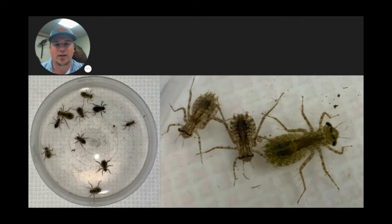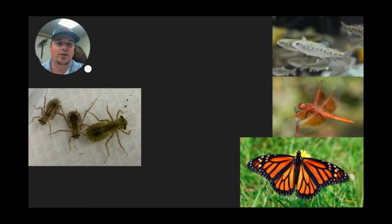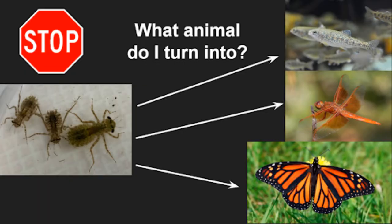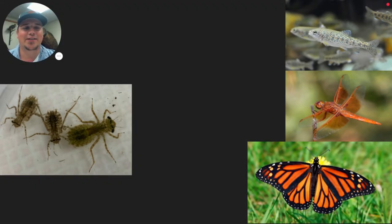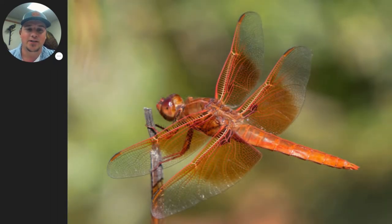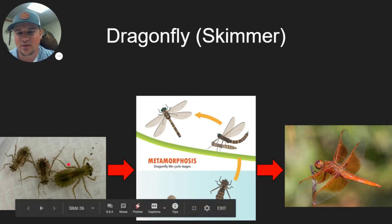The next animal looks similar to the last one, so use your detective skills. This is the baby animal and you're trying to figure out what it turns into. This animal also turns into a dragonfly — a different species called skimmer dragonflies. You can see how they look a little different, but their larvae look a bit different too. They go through the same life cycle process and turn into dragonflies as well.